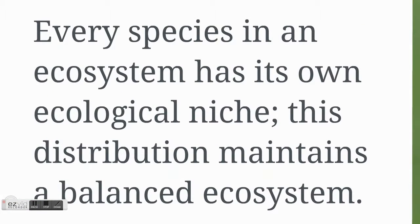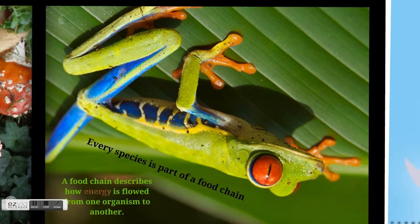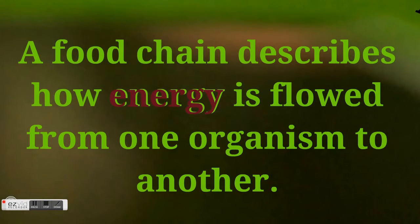Every species in an ecosystem has its own ecological niche. This distribution maintains a balanced ecosystem. Not only does every species have its own ecological niche, but every species is part of a food chain. We all gotta eat something and keep our energy, and a food chain describes how that energy is flowed from one organism to another.